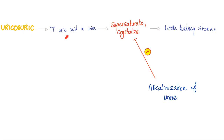Any uricosuric agent will increase uric acid in the urine — by definition. If uric acid is allowed to supersaturate and crystallize, you will get uric acid kidney stones. These are painful but radiolucent — you cannot see them on X-ray; you have to order an ultrasound. To prevent supersaturation, crystallization, and uric acid stone formation, alkalinize the urine.